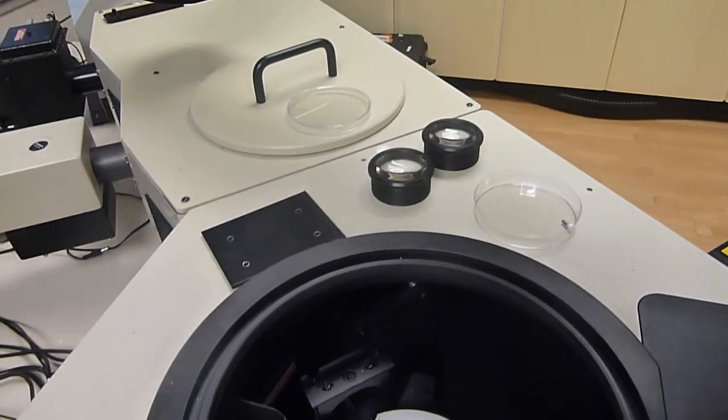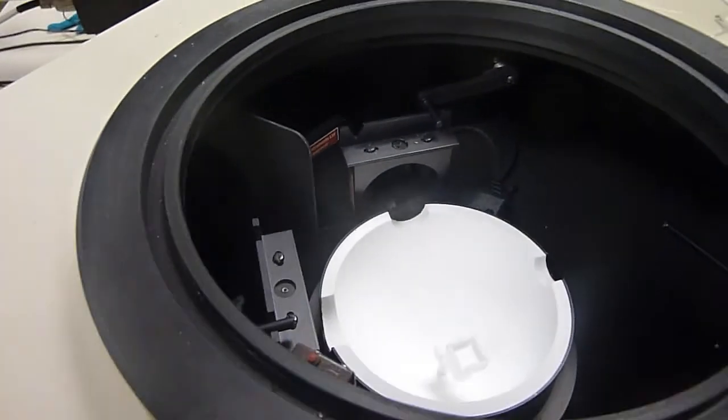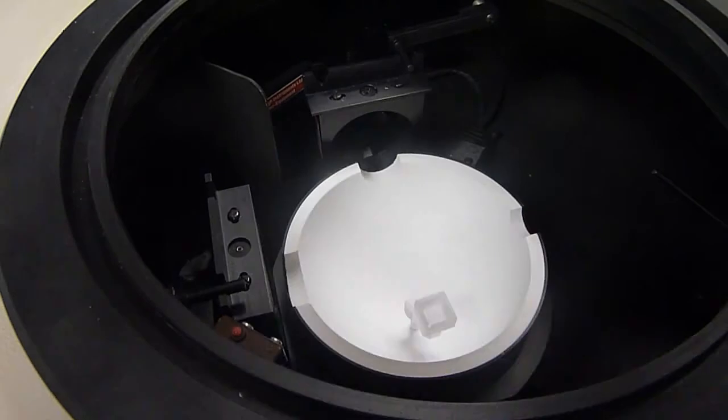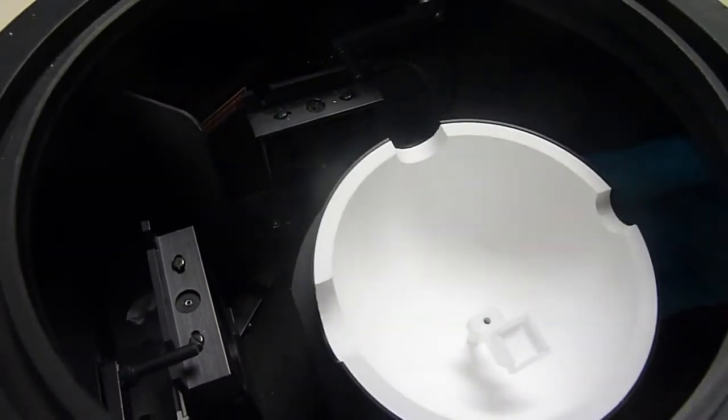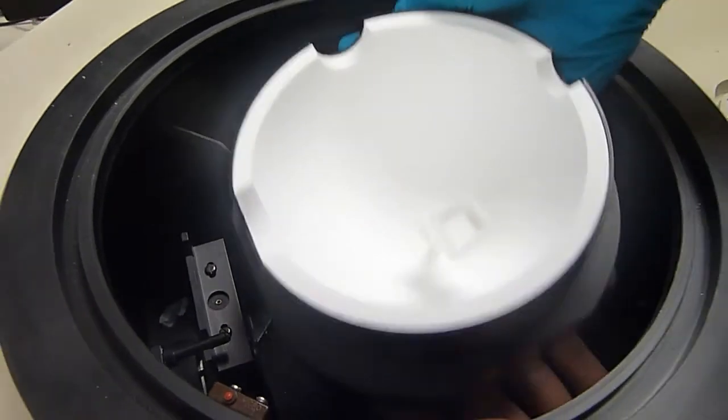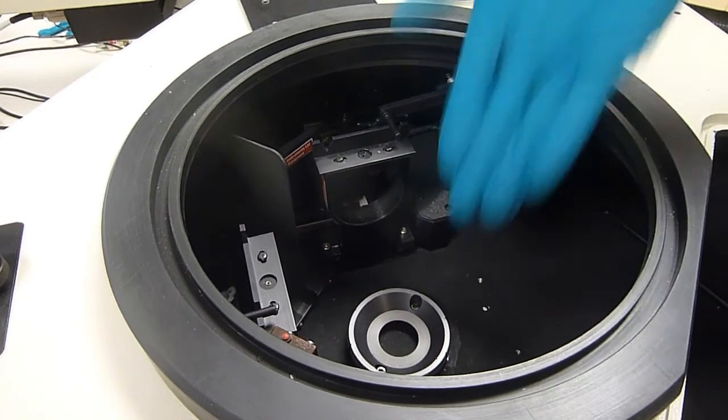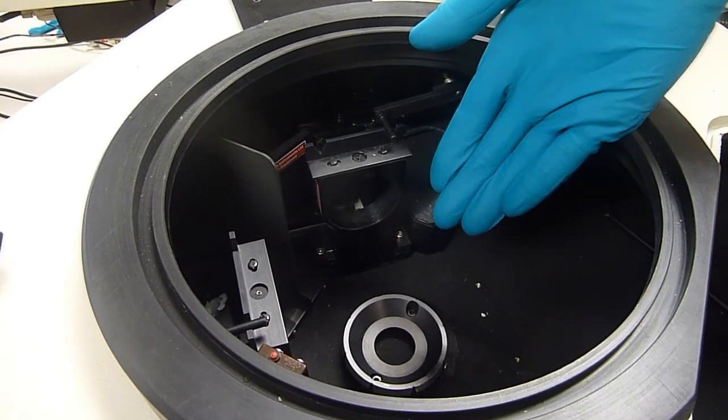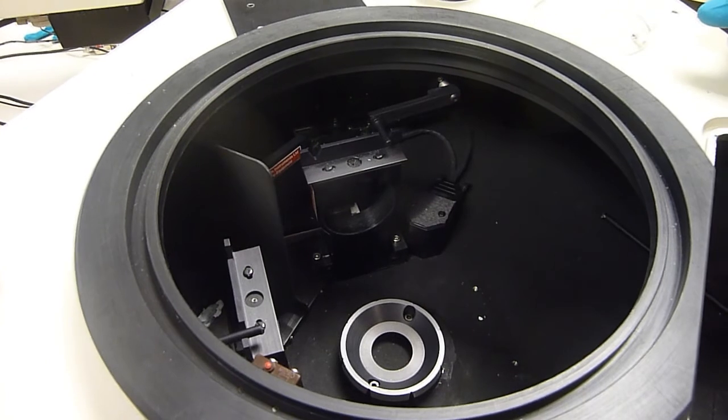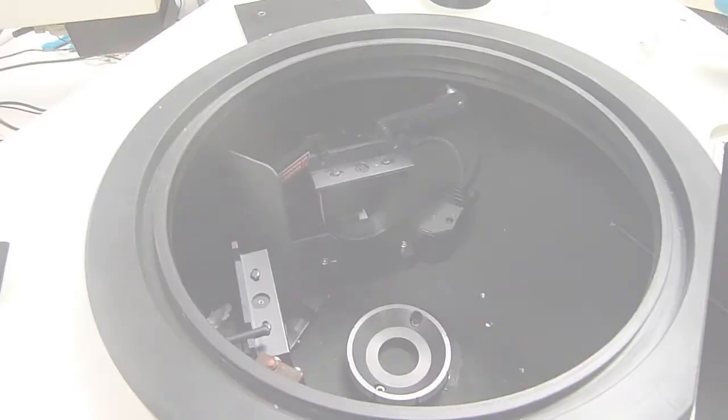When I'm not doing a quantum yield measurement I can then remove this integrating sphere very easily just by essentially taking this out. And then the sample chamber here is free to add in other sample holders. So that's a quick demonstration on how we do quantum yield measurements here at Edinburgh Instruments. Thanks very much.